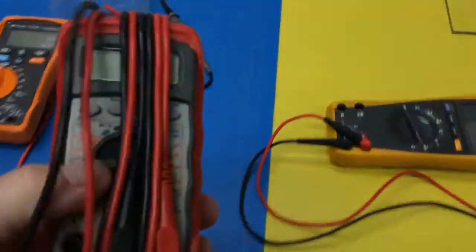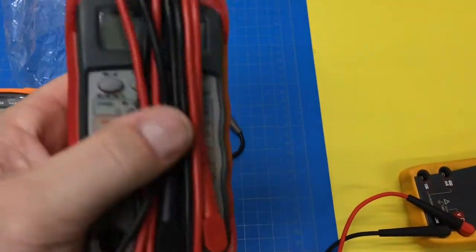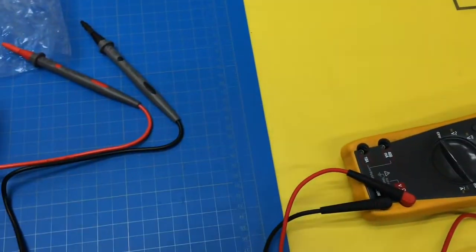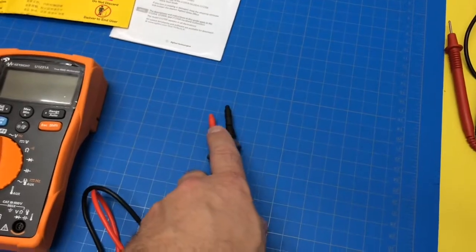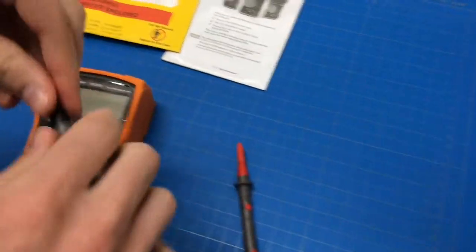It's a lot better than this crappy old... We've had this for about 20 years. It's a lot better than this, that's for sure. This old Craftsman. Alright, go ahead and pull these off. Let's check out the meter lead probes.